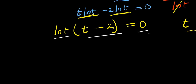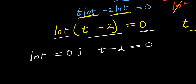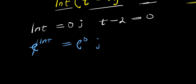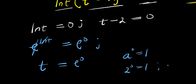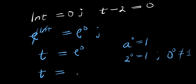I will equate each factor to 0. I have ln t equals 0, and also t minus 2 equals 0. For ln t equals 0, I solve for t by making use of e: e to the power of ln t equals e to the power of 0. Since e eliminates ln, I have t equals e to the power of 0. Any number raised to the power of 0 is 1 — the only exception is 0 to the power of 0, which is undefined or indeterminate. So e to the power of 0 is 1, giving t equals 1.